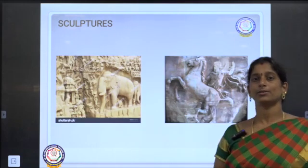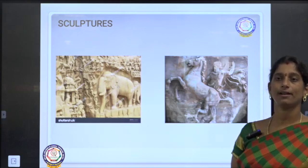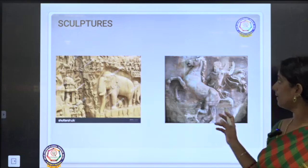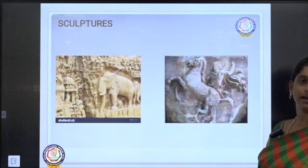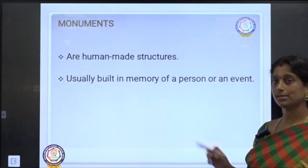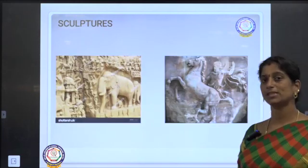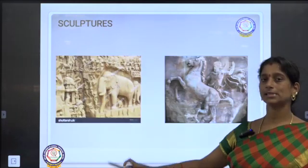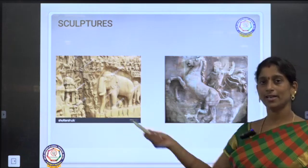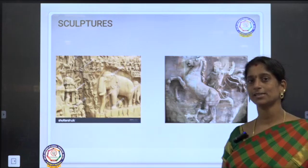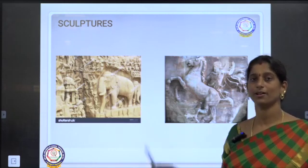Sculptures — statues made in the olden age. This is a very old sculpture of a king riding a horse. And this is a sculpture from very near to us — Mahabalipuram. Hope everyone knows Mahabalipuram — this is a sculpture from there.